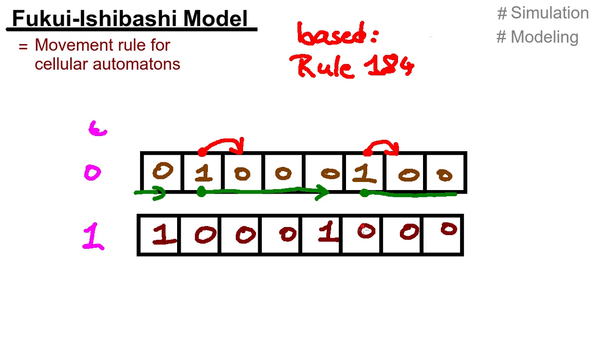This is almost it, but we have one extra rule for the Fukui-Ishibashi model, and that is, we have actually a maximum speed that we can set. So we can move until we reach a car in front of us, until we reach a one in front of us. But we can at max move, for example, let's say, two fields.